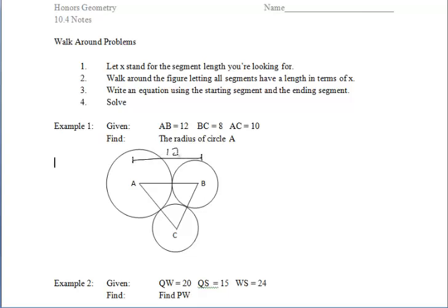For the first problem, we're given that segment AB has a length of 12, segment BC has a length of 8, and segment AC has a length of 10. We want to find the radius of circle A. Looking at step 1 for walk-around problems, it says let X stand for the segment length you're looking for. This yellow segment is a radius of circle A, so I'm going to call that X, since it's what we want to find.